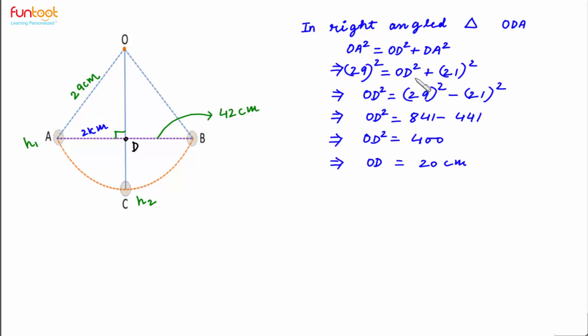So putting the values, in place of OA we can write 29, and in place of DA we can write 21. Doing simple calculations, we can find OD to be 20 centimeters. So OD here is 20 centimeters.